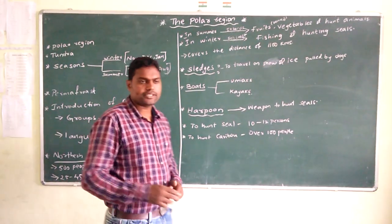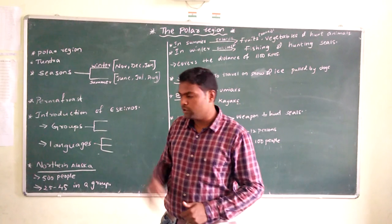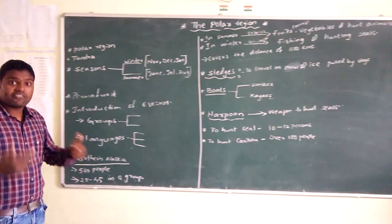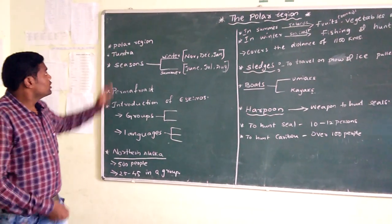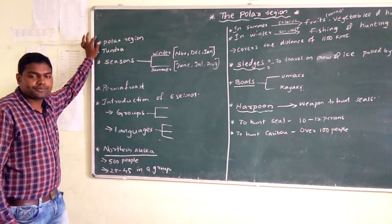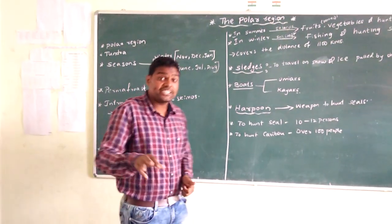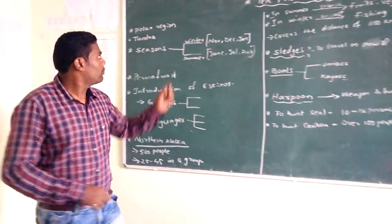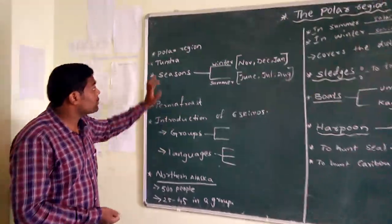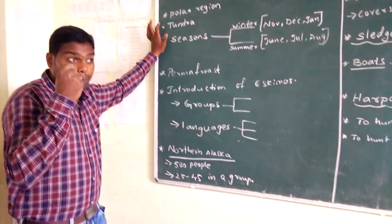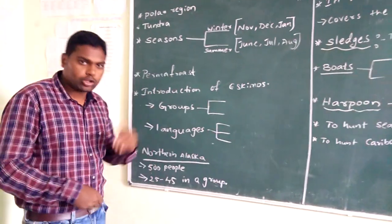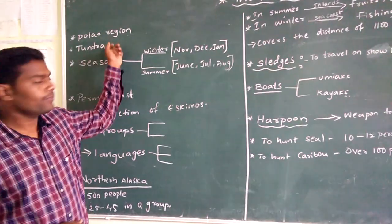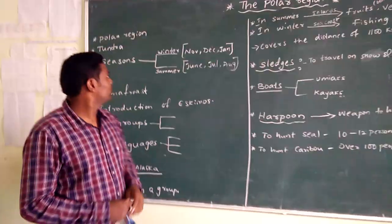In today's class, we will discuss more about the remaining topics from the 4th lesson, that is Polar Regions. Let's rewind what we discussed in the last class. We discussed about Polar Regions — the places which are near to the poles, either North Pole or South Pole. The places which are in North or South Polar Regions are called Tundra. The meaning of Tundra is 'Tuku'.